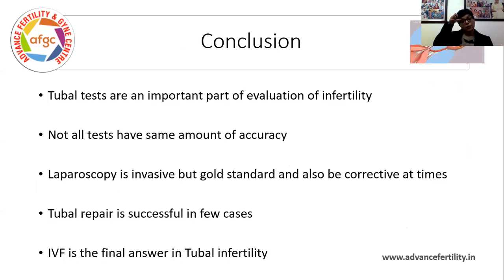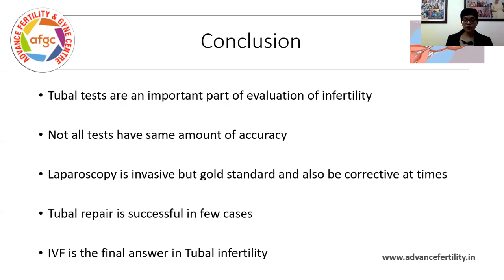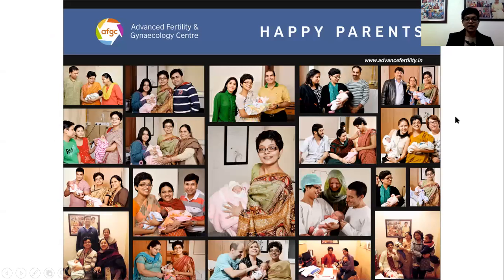To conclude: tubal tests are an important part of evaluation of infertility. Not all tests have the same amount of accuracy. Laparoscopy is invasive but gold standard and can also be corrective at times. Tubal repair is successful in some selective cases but not all. IVF is the final answer for tubal infertility. There is a special form of tubal damage called hydrosalpinx which we shall cover in yet another video. Thank you for your patience and we hope to hear from you soon.